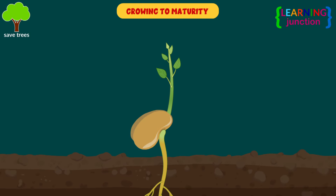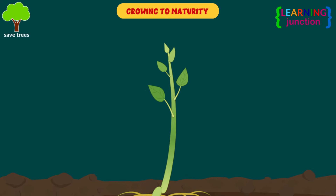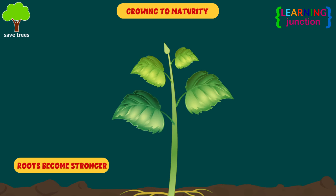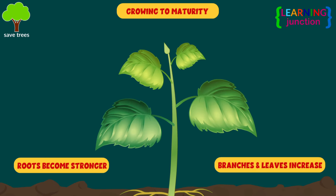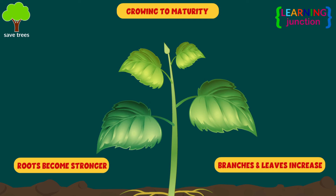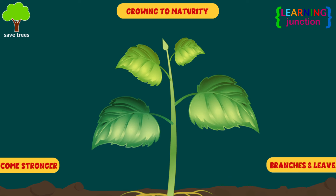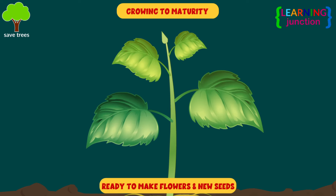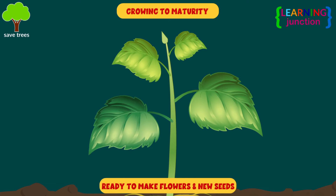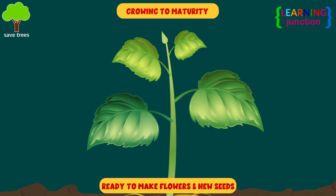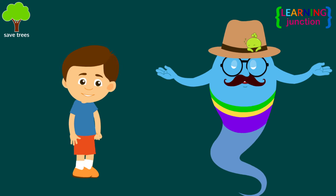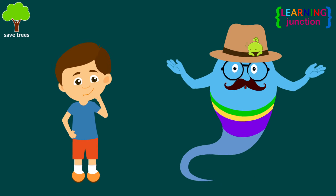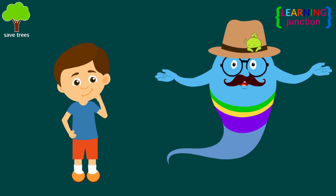Growing to maturity. In this stage, the plants become mature; their roots become stronger, and branches and leaves also increase. During this time, plants are ready to make flowers and new seeds. Now we'll see the next stage of the plant life cycle.